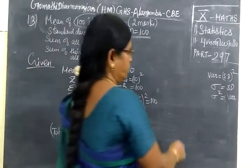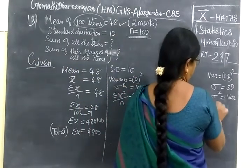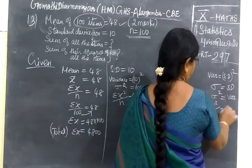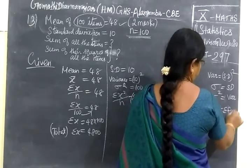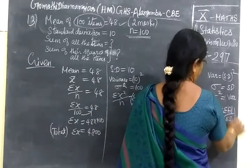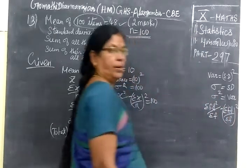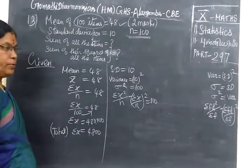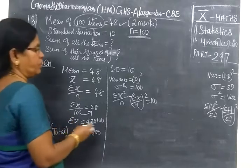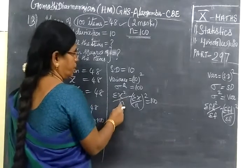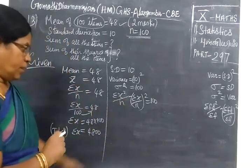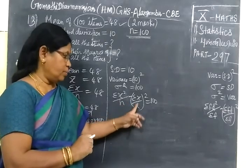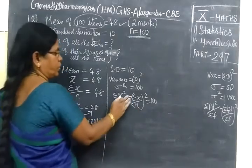In the previous class we saw sigma FT square by sigma F for grouped data, FT by sigma F whole square when frequency is given. But here there is no frequency. So sigma X square by N minus sigma X by N the whole square for discrete values.